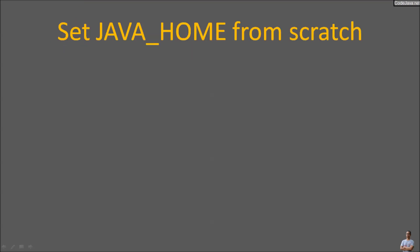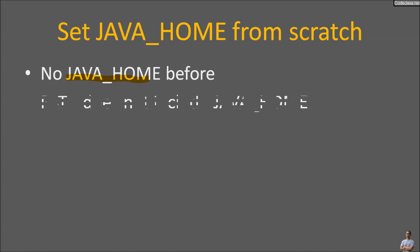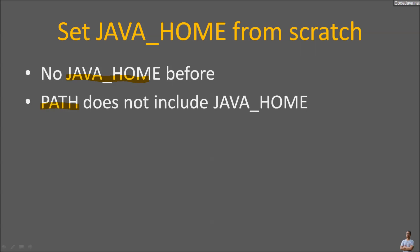First I'm going to show you how to set the JAVA_HOME environment variable from scratch. Suppose that there's no JAVA_HOME system environment variable before, and the PATH system environment variable doesn't include the value for JAVA_HOME.